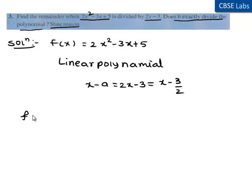By remainder theorem, when f(x) is divided by (x - 3/2), f(3/2) is the remainder. Therefore, f(3/2) = 2 times (3/2)² - 3 times (3/2) + 5.